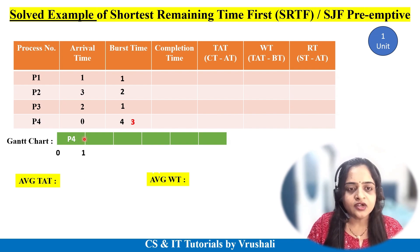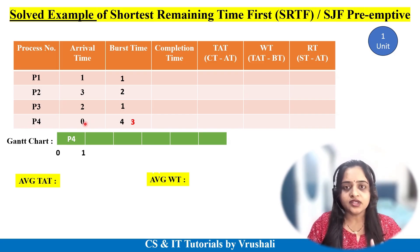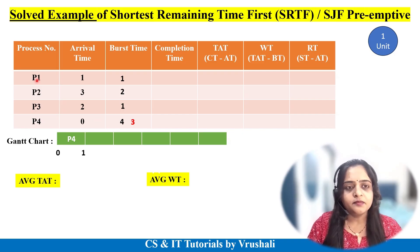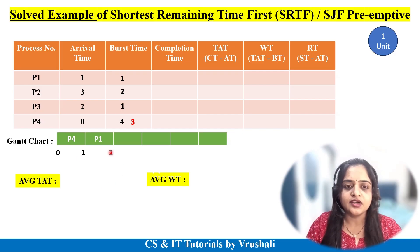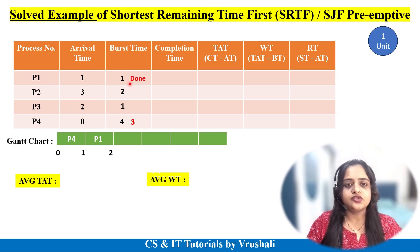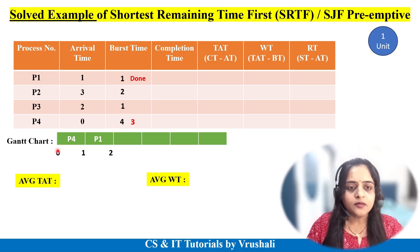Now check at time 1: P1 has arrived, so there are now two processes — P1 and P4. Check which process has the smallest burst time: P1's burst time is 1 and P4's remaining burst time is 3. The smallest is 1, so the CPU executes P1 for one unit of time. So 1 plus 1 equals 2. P1 has already required only 1 unit of time for execution, so P1 is now completely executed.